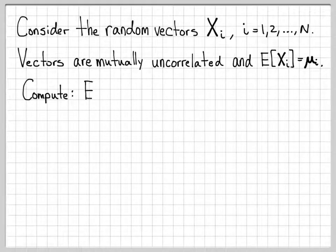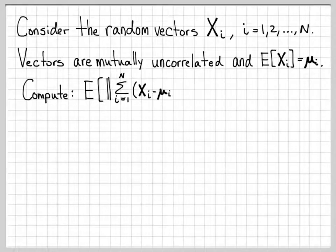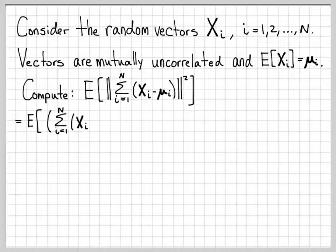What we're going to do is a computation. We're going to start with the expected value of the norm squared of a sum of random vectors. The sum is the random vector minus its mean vector over all i. We're going to simplify this, and it turns out this does simplify because of the fact that they are mutually uncorrelated.